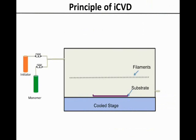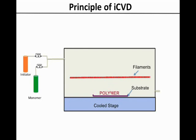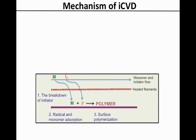iCVD is very similar to the hot filament chemical vapour deposition process. In both methods, the activation energy required to start deposition reactions is supplied by the heated filament inside the vacuum reactor. In iCVD, in addition to the monomer, a chemical species called the initiator is also introduced into the chamber during deposition.